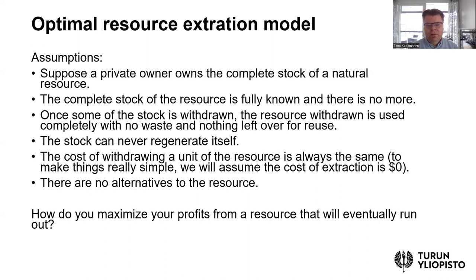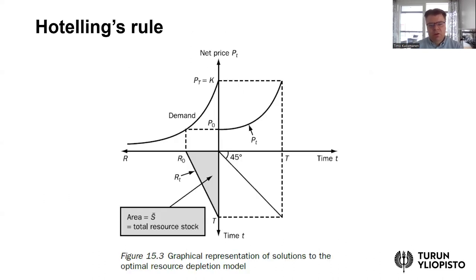We also ignore any alternatives to the resource. The question that arises then is: how would we maximize profits from a resource that is finite and will eventually run out? This diagram tries to illustrate the important result known as Hotelling's rule. It's the same Hotelling who was also behind the idea of the travel cost method that we discussed in the previous lesson — a very talented and productive person.